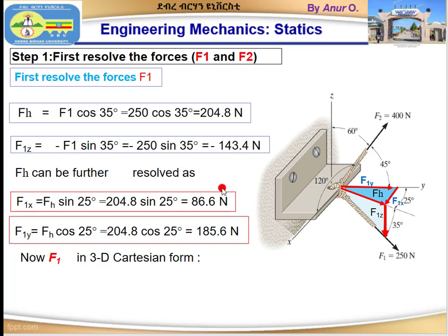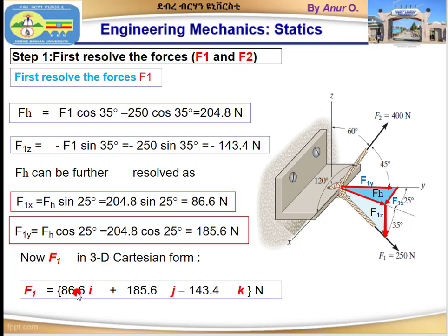Now we have calculated all components: F1x, F1y, and F1z. The final step for F1 is to combine those components and express them in Cartesian form. Therefore F1 equals 86.6i plus 185.6j minus 143.4k newtons. We have now expressed F1 as a Cartesian vector.